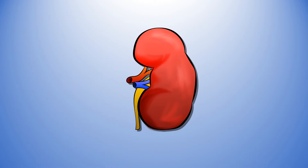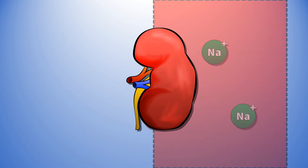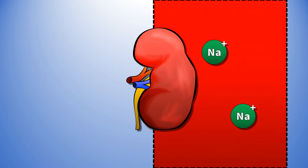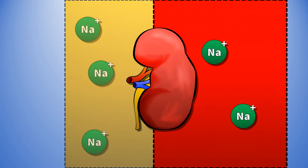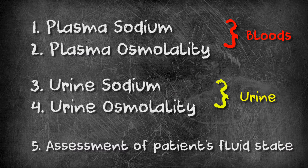By contrast, if blood osmolality is low and urine osmolality is high, you have dilute blood and concentrated urine. This is just something a little bit more fishy going on. We need to investigate further.